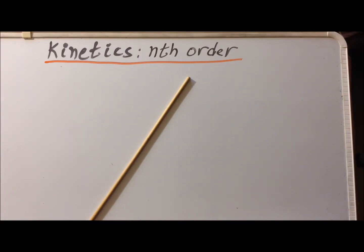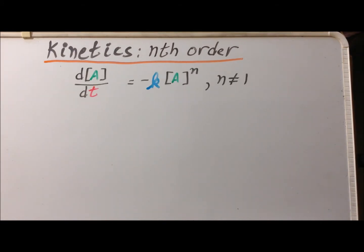Hello. In this video, we are going to derive an expression for the integrated rate law for a general nth-order reaction where n is not equal to 1, and then we are going to derive an expression for the half-life of a generalized nth-order reaction where n is not equal to 1. Here we have the differential form of the rate law for a general nth-order reaction, and we're specifying that n is not equal to 1.